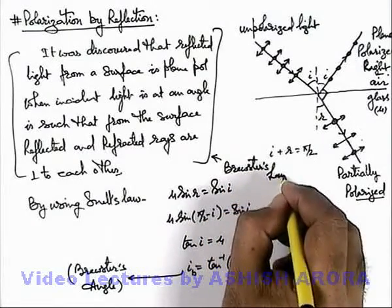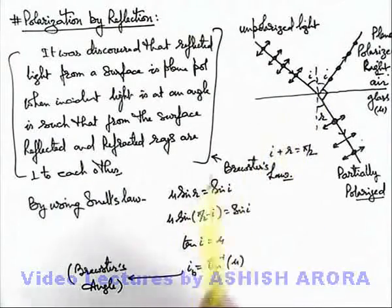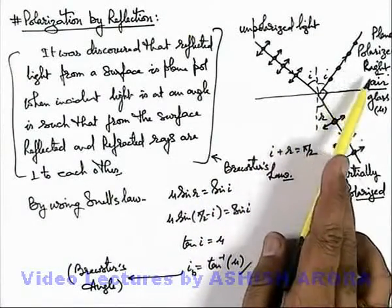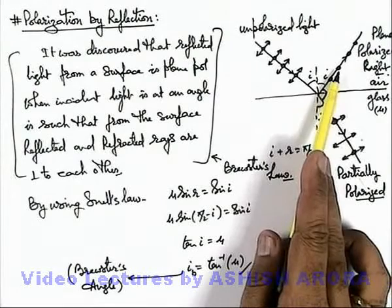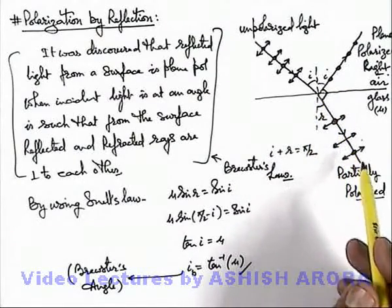Brewster's law states that whenever light is incident on a surface at Brewster's angle, the reflected light is plane polarized or linearly polarized, and the transmitted light into the media is partially polarized.